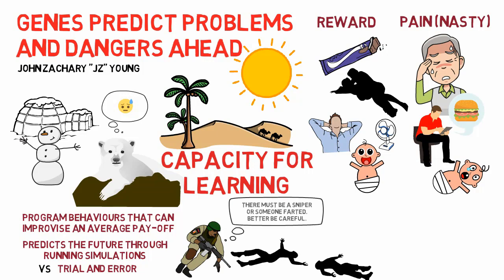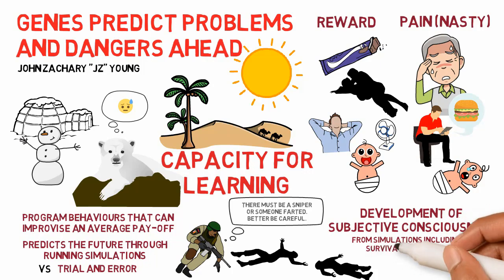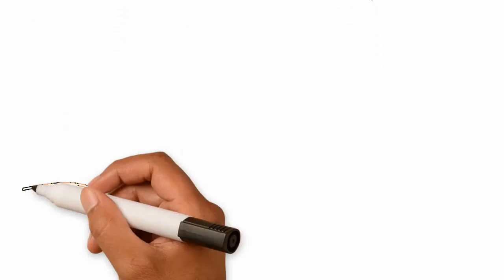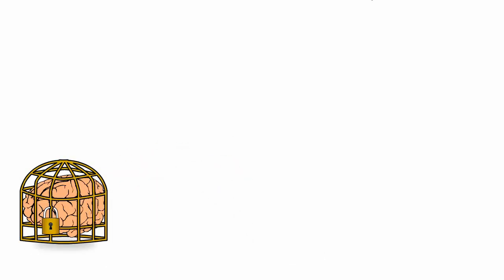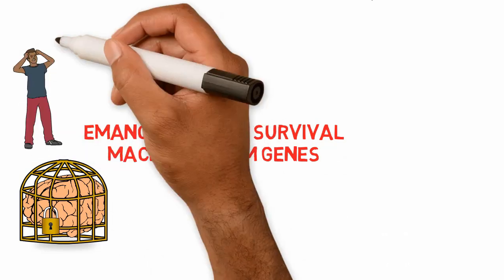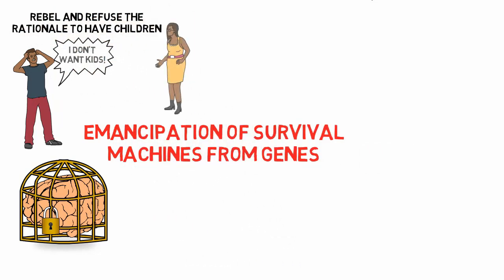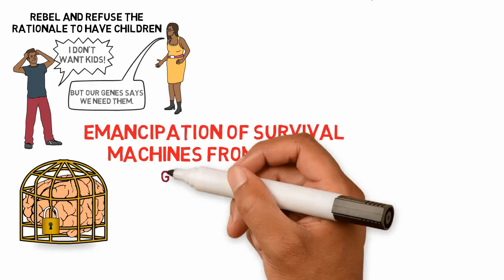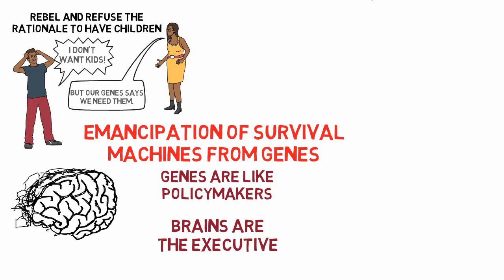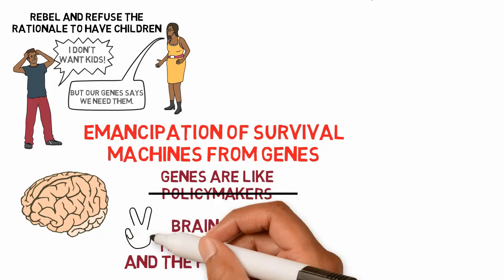Dawkins argues that a consequence of our evolution for the capacity to simulate possibly gave rise to subjective consciousness. He hypothesizes that consciousness arose when simulations of the world started to include a model of the survival machine itself. The evolutionary trend of emancipation from genes culminated when survival machines started acting as executive decision makers — as humans can rebel and even refuse the rationale of the genes to have children. Genes are like policy makers and the brain is the executive, though eventually the brain takes over more policy decisions.